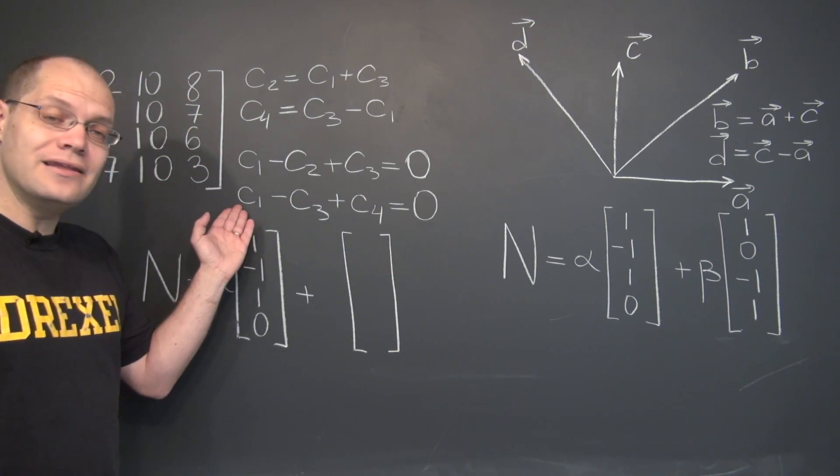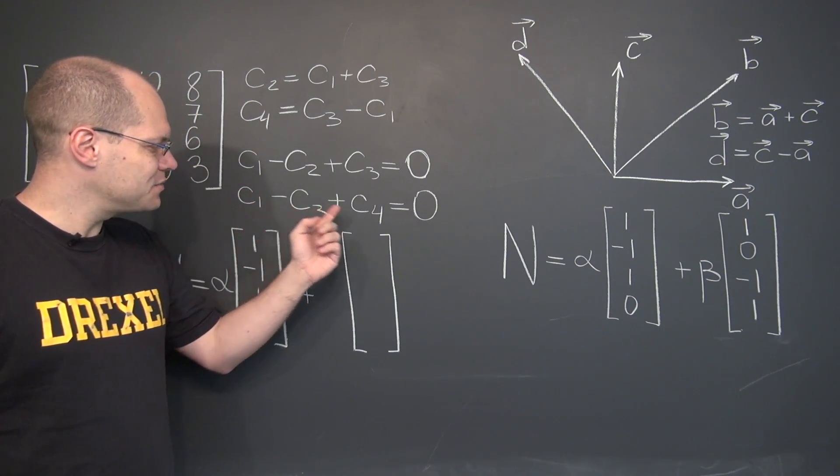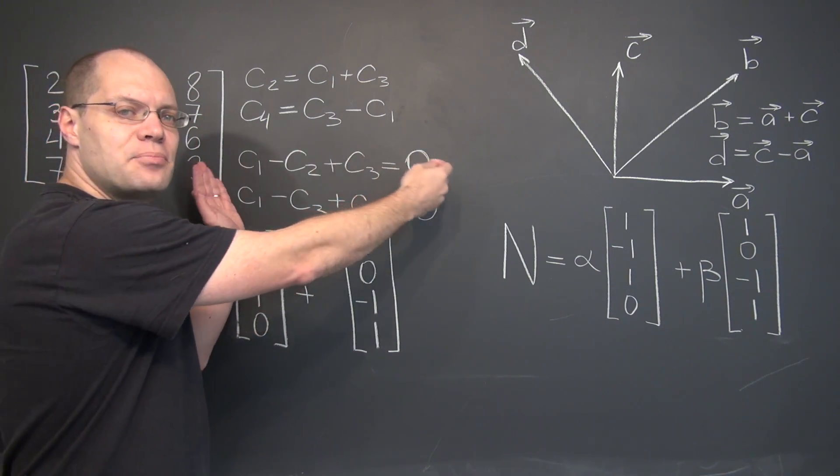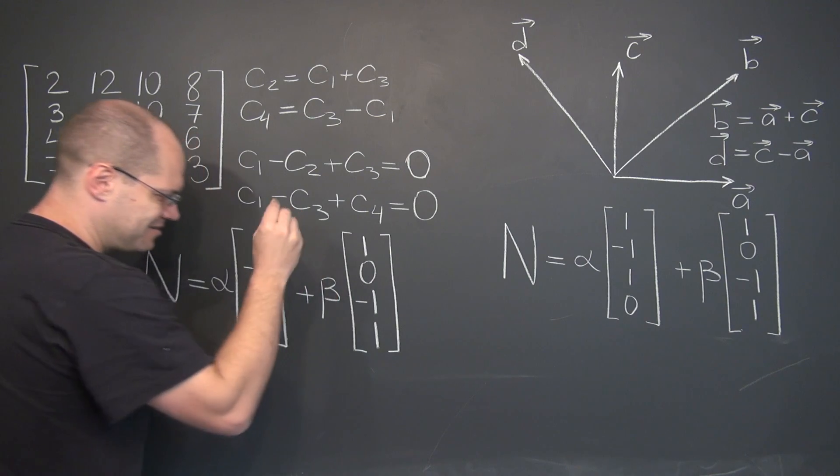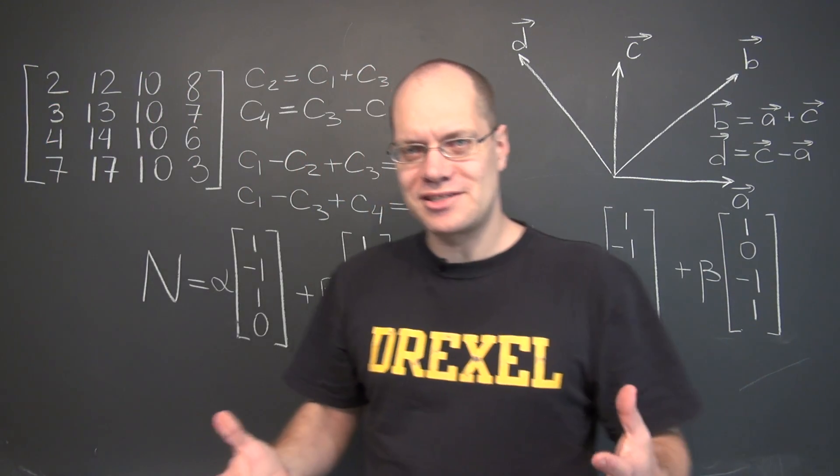Okay, now looking at this one, we have 1, 0 for C2, minus 1, 1. And once again, we can take any proportion of this linear combination. So that's where beta comes from. So there you go. That's what the null space of a matrix is.